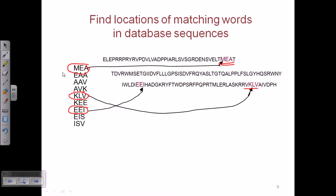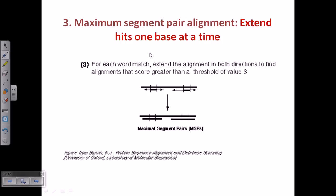Once a match is found — say MEA is found in the database — we place the query word there and then check whether nearby sites also maintain the match. This is the third part: maximum segment pair alignment, which is the extension of hits one base at a time. If MEA is the exact match (called a hit), we extend one nucleotide in both directions to check whether the match continues.